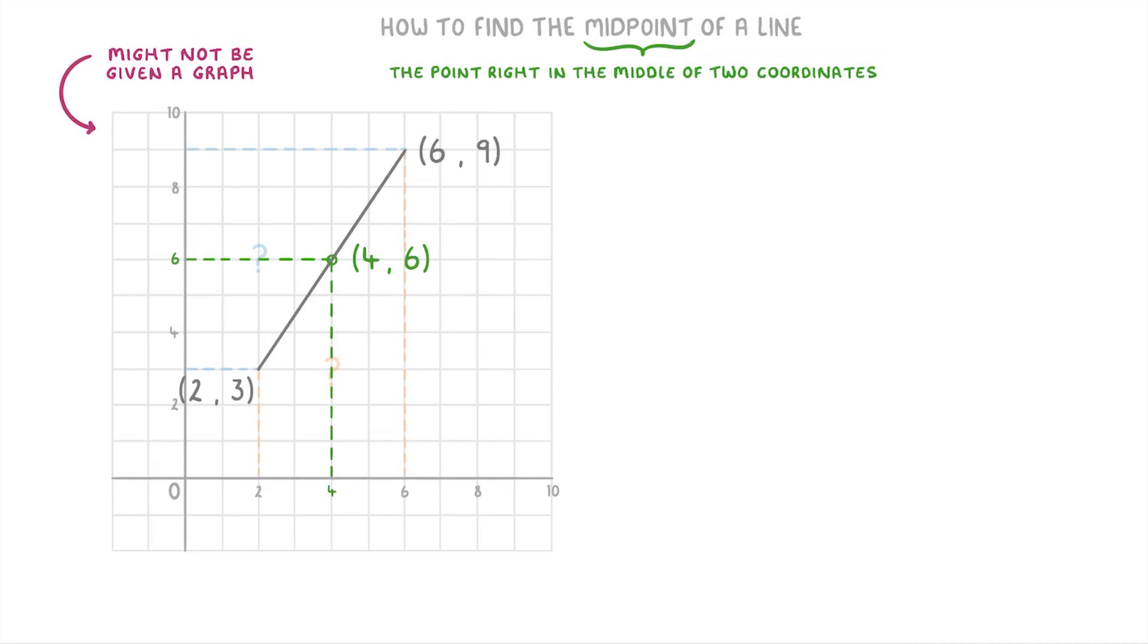So a better technique to find the midpoint is to use this formula instead. It works in basically the same way, by finding the average of the x-values and the average of the y-values.